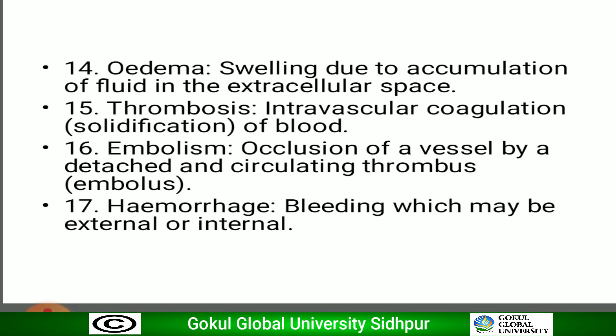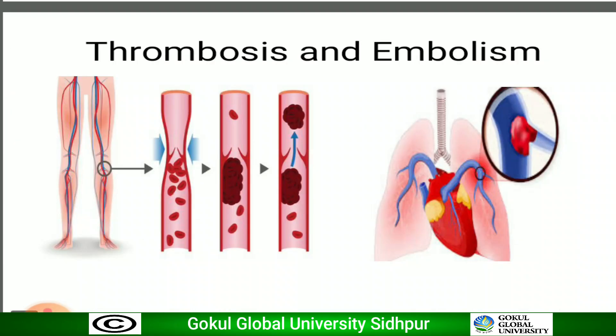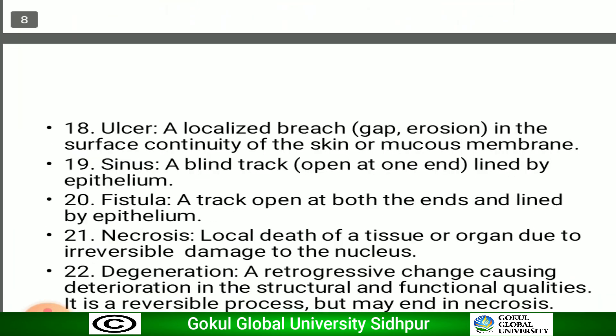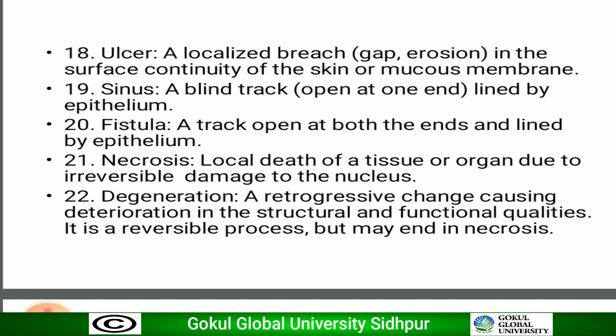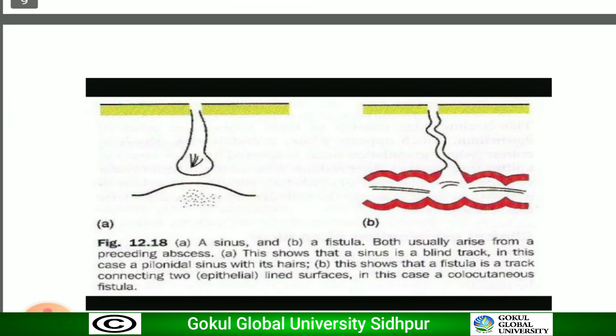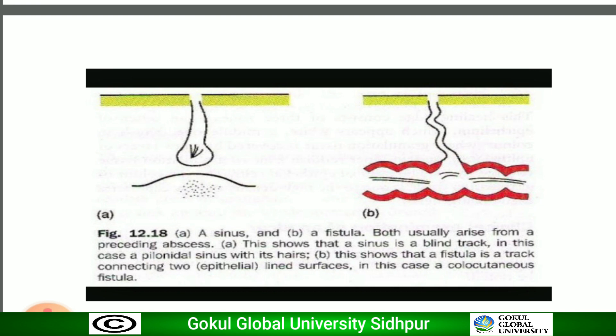Hemorrhoid refers to bleeding, which may be external or internal. An ulcer is a localized gap or erosion in the surface continuity of the skin or mucous membrane. A sinus is a blind tract lined by epithelium. A fistula is a tract open at both ends and lined by epithelium — diagram A shows a sinus, diagram B shows a fistula.